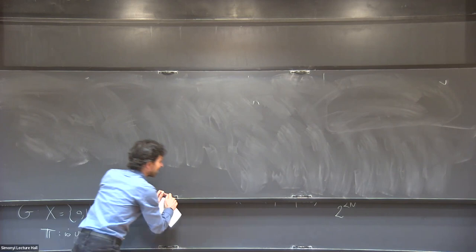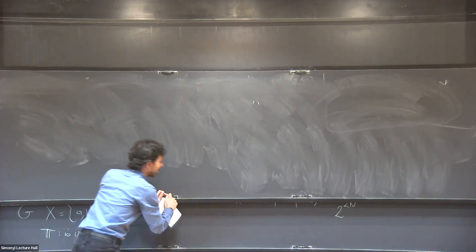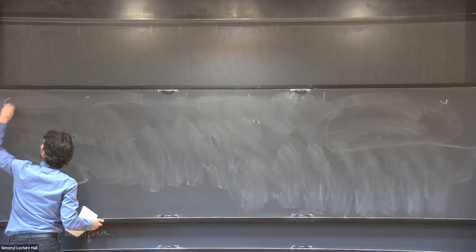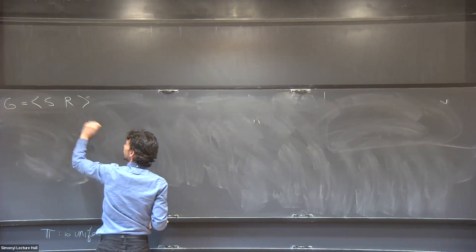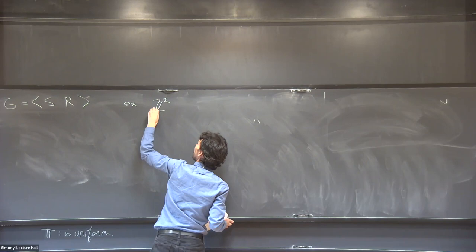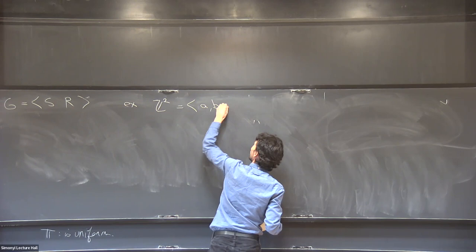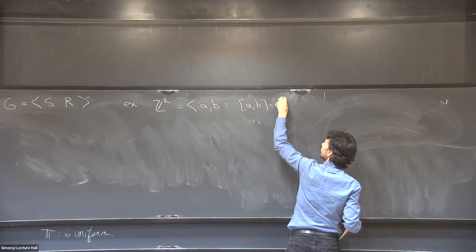I'll give some general definitions and then specialize to the group we care about. I'm going to talk about finitely presented groups. A finitely presented group is given by generators S and relations R. For example, a presentation of Z cross Z has two generators A and B with the only relation being that the group commutator A B A-inverse B-inverse equals the identity.